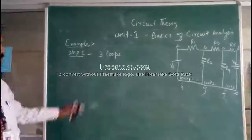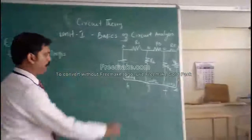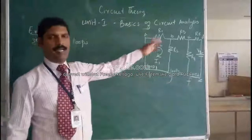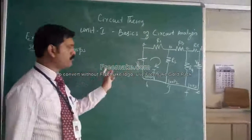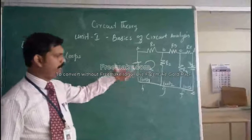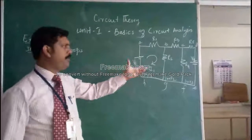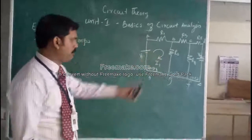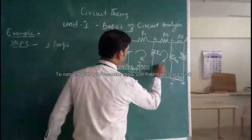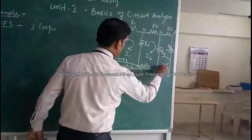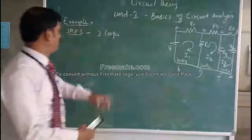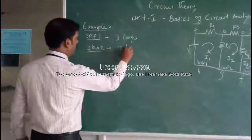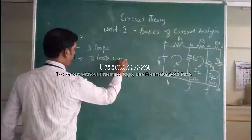Once we have three loops, we assign three loop currents. I can assume any direction — whatever direction I take, I have to solve the loop in that direction and form the equation. I am taking loop current I1 for loop 1, I2 for loop 2, and I3 for loop 3.